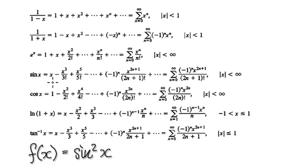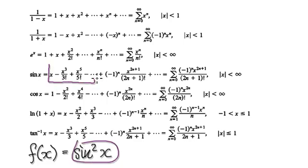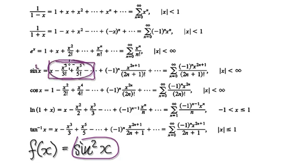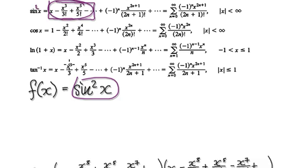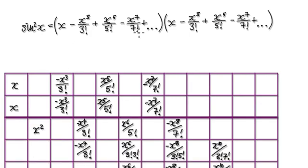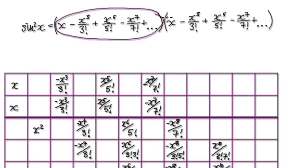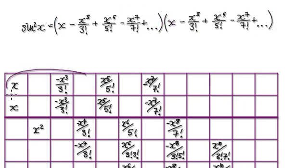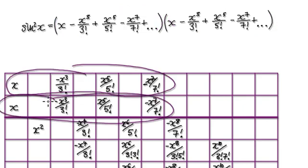So two ways of doing this. The first way would be to get this series and then multiply it by itself. So it would be this, multiply it by itself, so it would be this, and then multiply it by itself. So it would be this, and then multiply it by itself.